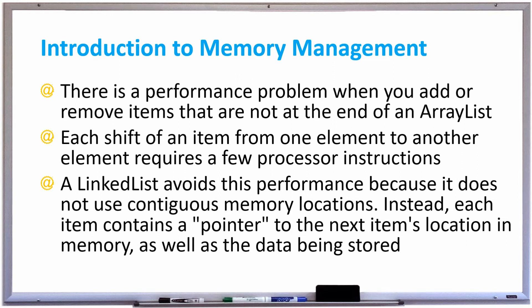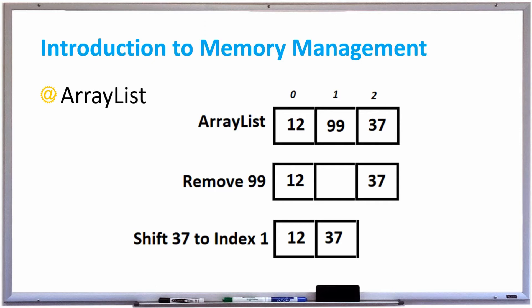Let's take a look at some examples. Here's an example of an ArrayList where we have three elements: at index 0 we have 12, index 1 we have 99, and index 2 we have 37. If we were to call the remove method to remove 99, the ArrayList is going to have to shift 37 over to fill the empty space. Imagine if this had a thousand elements and you had to remove the first element — you'd have to shift 999 elements to the left and update all the indexes. Similarly, when adding an element, you have to shift all elements to the right to make space.